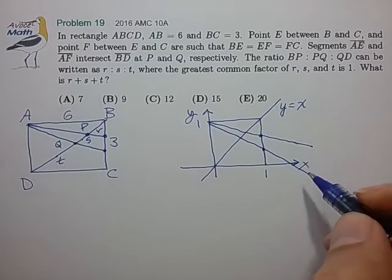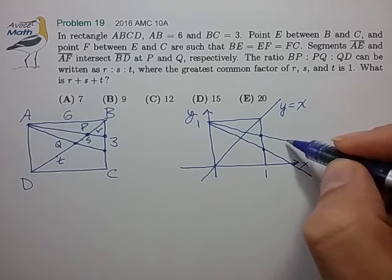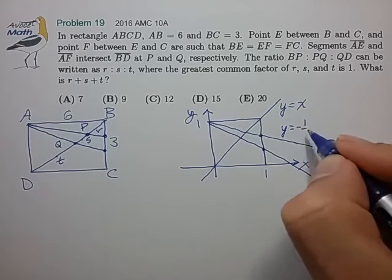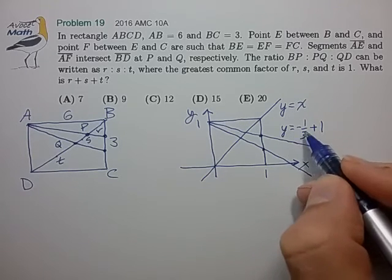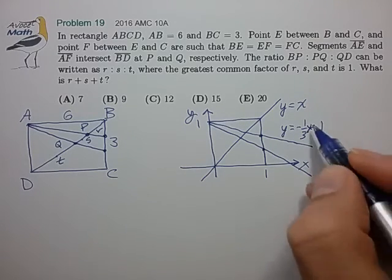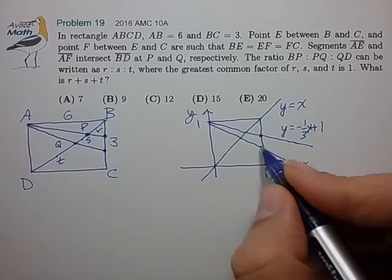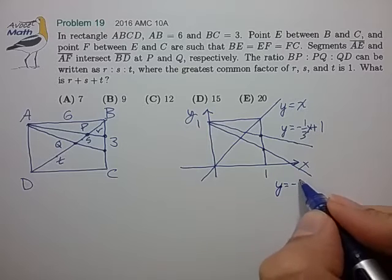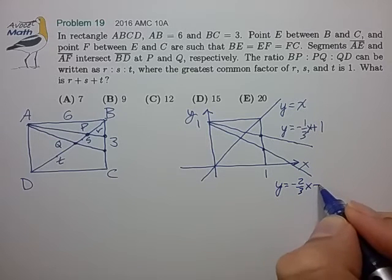I'm going to trisect this side. And to find two lines, the first line has a slope of minus one-third. So this equation is y equals minus one-third x plus one. And the second line has a slope of minus two-thirds plus one.